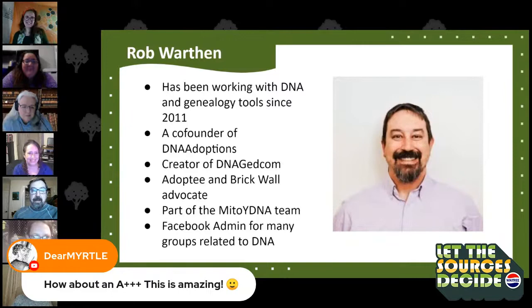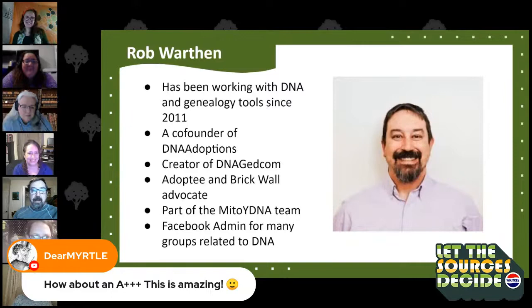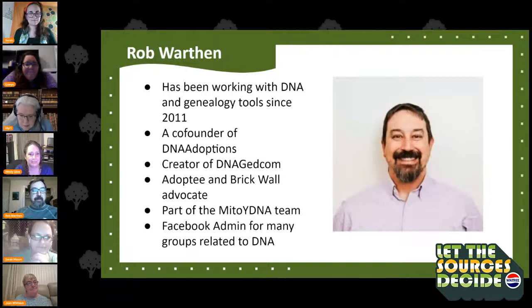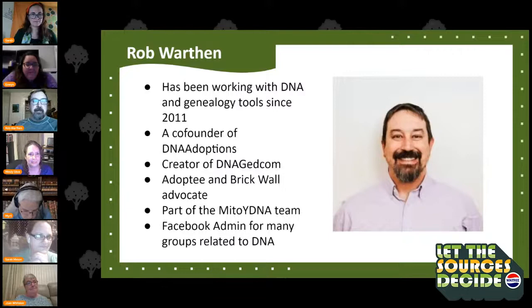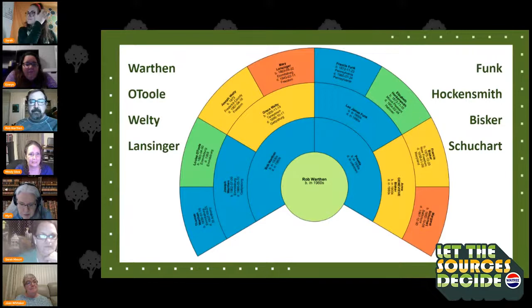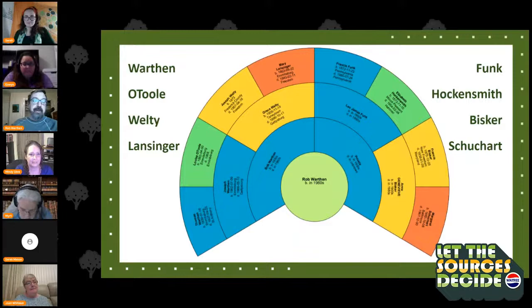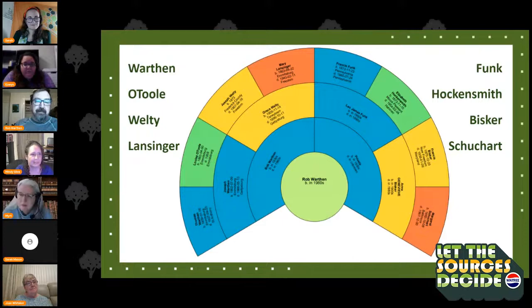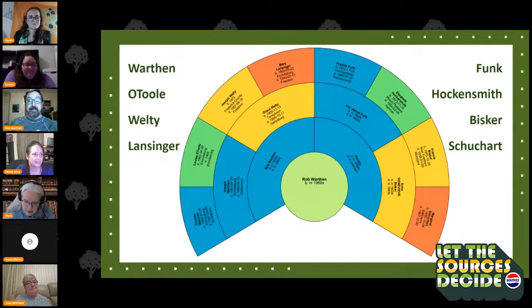Rob is also an adoptee and brick wall advocate, part of the mito-Y DNA team, and a Facebook admin for many DNA-related groups. Rob added that he got involved because of his wife, who was adopted. His family tree is somewhat one-sided — his dad's sister-in-law was a librarian and built out the paternal grandfather's side using books and resources, but most of the rest has been played with and lacks good sources. He's anxious to see what the team finds.